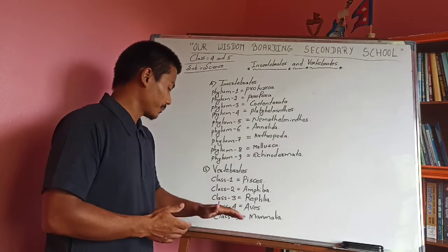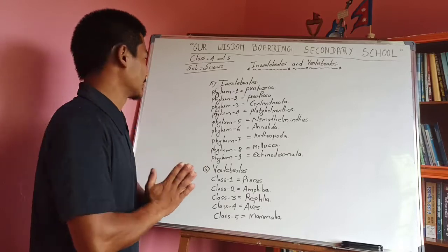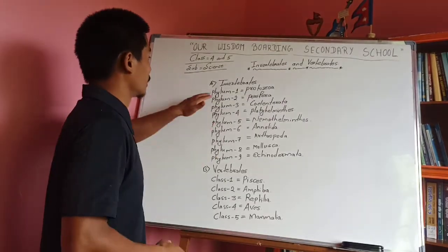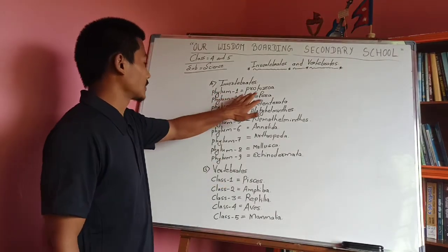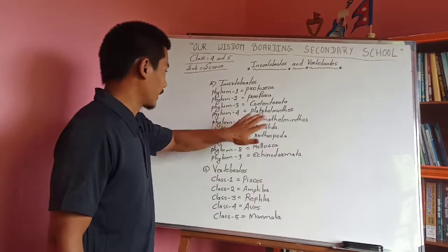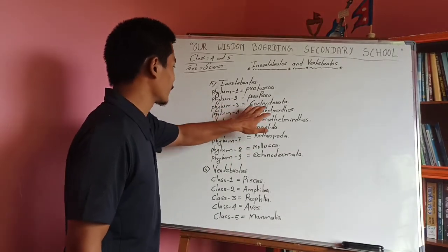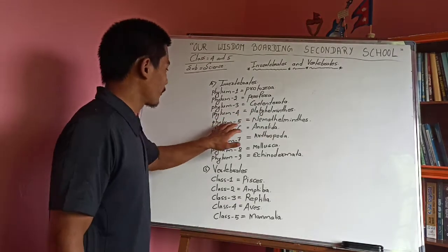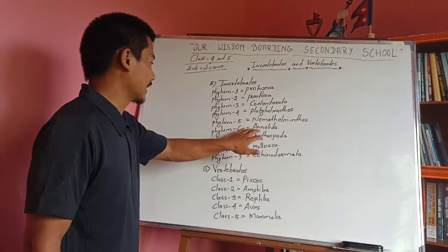This is the Class 5 topic. Invertebrate phyla: Phylum 1 is Protozoa. Phylum 2 is Porifera. Phylum 3 is Cnidaria. Phylum 4 is Platyhelminthes. Phylum 5 is Platyhelminthes.